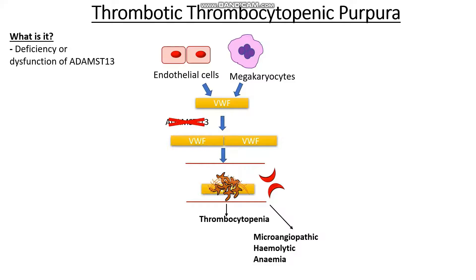These clots can then get deposited all over the body, and one of the sites that they get deposited in is the kidneys, and this can lead to kidney damage and acute kidney injury. Another area with very small blood vessels tends to be the brain, so therefore if clots get deposited in the brain we may have neurological dysfunctions. Thus thrombotic thrombocytopenic purpura actually presents in a characteristic pentad of symptoms.